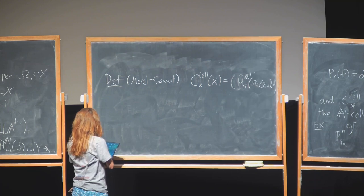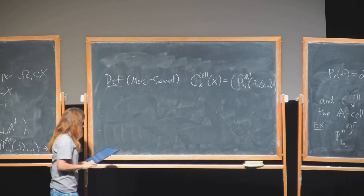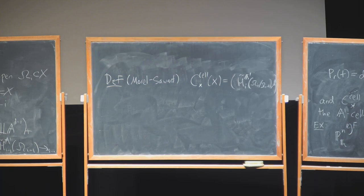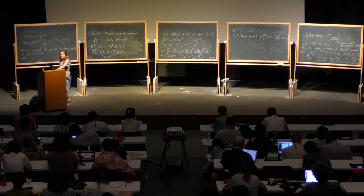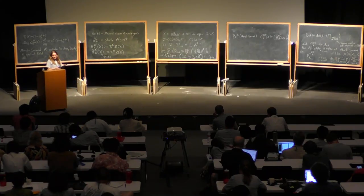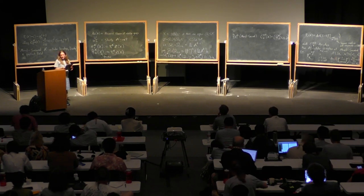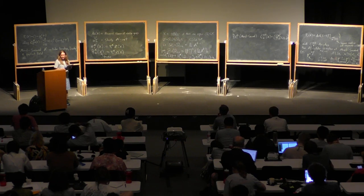We're out of time, but let's discuss that next time and leverage that intrinsic description to consider non-cellular varieties, as well as conjectured by Fabian and Anan. I'll stop there. Thank you.